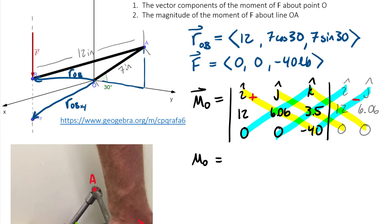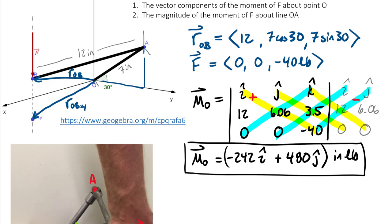Computing this determinant, we find that the components for moment about point O as a vector are going to be negative 242 in the I hat, and I get the negative basically just of 40 times 6.06. And then in the J hat I have 12 times negative 40 but then I take the negative of that whole thing and this becomes a positive 480 in the J hat. And the units on this are going to be the product of the units of the length and the force, so this is going to be inch pounds. This would be my answer to part one, my moment around point O.